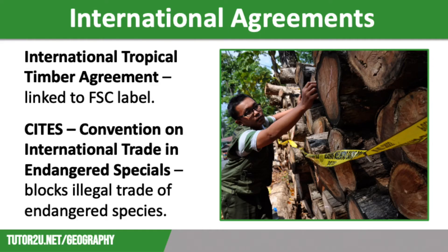There are many international agreements in place to protect rainforest resources and biodiversity. For example, we have the 2006 International Tropical Timber Agreement. This restricts trade in tropical rainforest hardwoods, making it more difficult to sell them and make money from them. This is important as tropical hardwoods are extremely valuable, so millions of trees have been illegally cut down because loggers know that people will pay high prices for the timber. Illegal felling often goes unnoticed by officials and therefore unpunished.